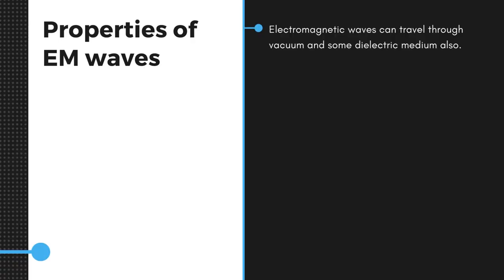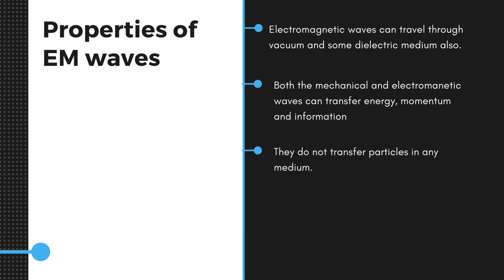An electromagnetic wave can travel through vacuum or some dielectric mediums. Both the mechanical and electromagnetic waves can transfer energy, momentum, and information, but they do not transfer particle in any medium. The electrical field results from the force of voltage and magnetic field results from the flow of current.